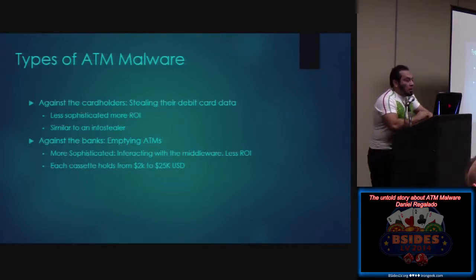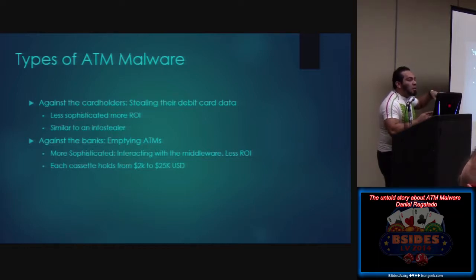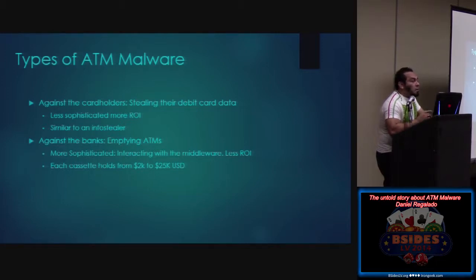There are two types of ATM malware. The first attacks card holders — stealing information from your debit card: account information, expiration date, the PIN (which is encrypted, but we'll see how they crack it). This is less sophisticated — just a process inside the ATM grabbing logs and sending them out. The return on investment is using that information for the carding process to clone your debit card. The second type is to empty ATMs, which is more sophisticated because they need to talk to the middleware and understand how it works to interact and ask the ATM to dispense money.